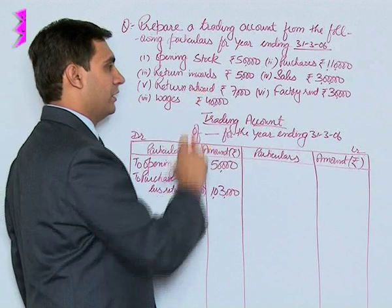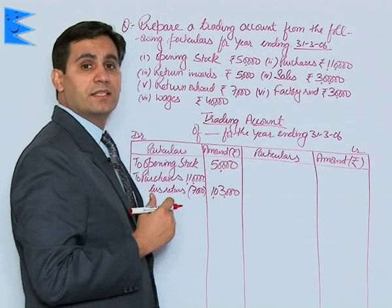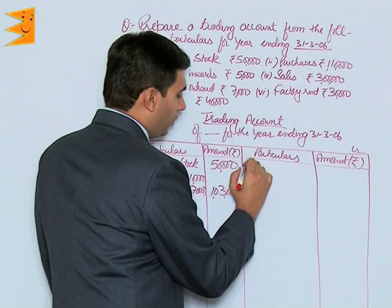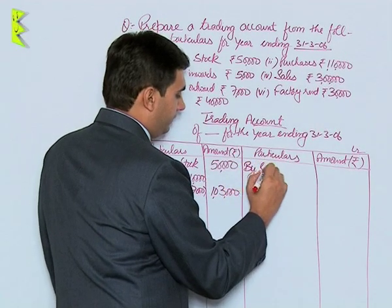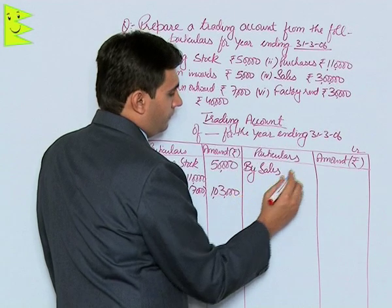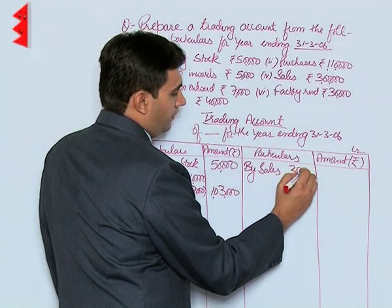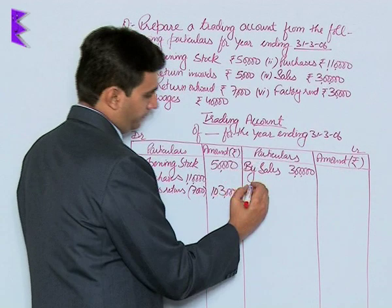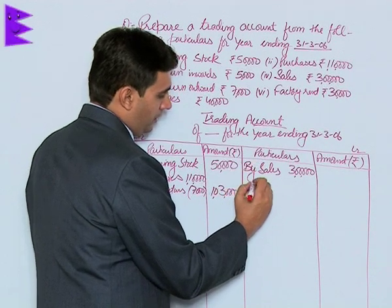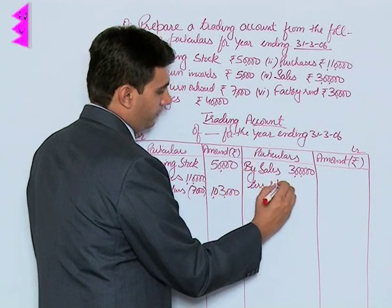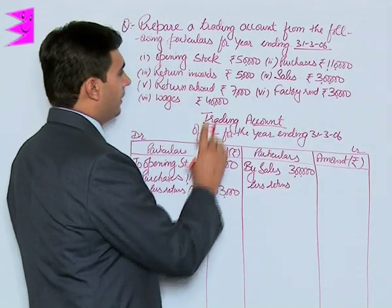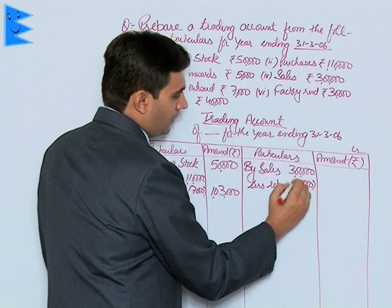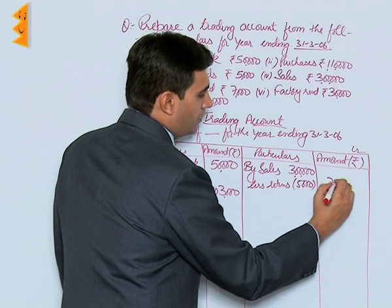Return inwards means sales return, so it should be deducted out of sales. On the credit side, by sales 3,00,000 less returns of 5,000, the net sales amount comes to 2,95,000.